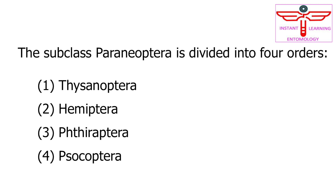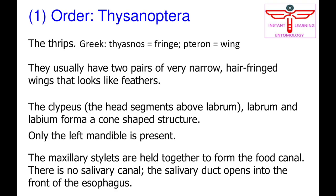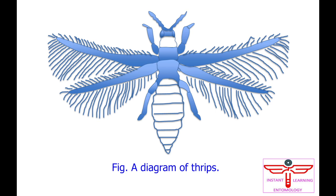Order Thysinoptera, the thrips. From Greek, 'Thysanos' means fringed and 'pteron' means wing. They usually have two pairs of very narrow, hair-fringed wings that look like feathers.